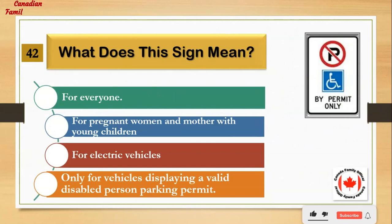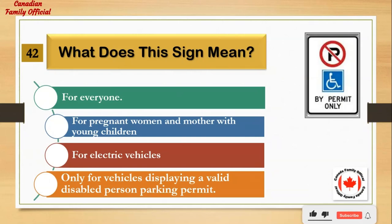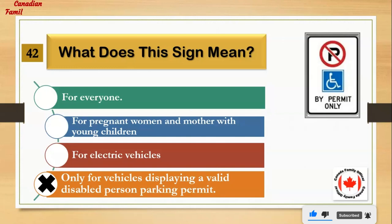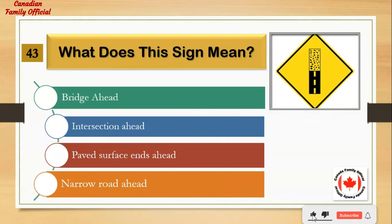What does this sign mean? Number 1: for everyone. Number 2: for pregnant women and mothers with young children. Number 3: for electric vehicles. Number 4: only for vehicles displaying a valid disabled person parking permit. And the answer is: only for vehicles displaying a valid disabled person parking permit.